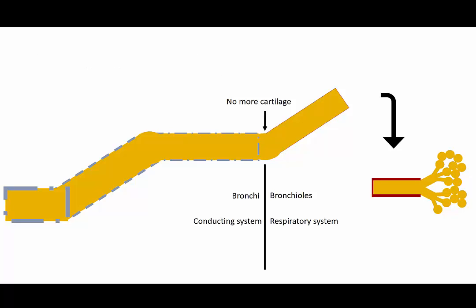The bronchioles further divide until they form terminal and respiratory bronchioles, finally culminating in alveolar sacs.